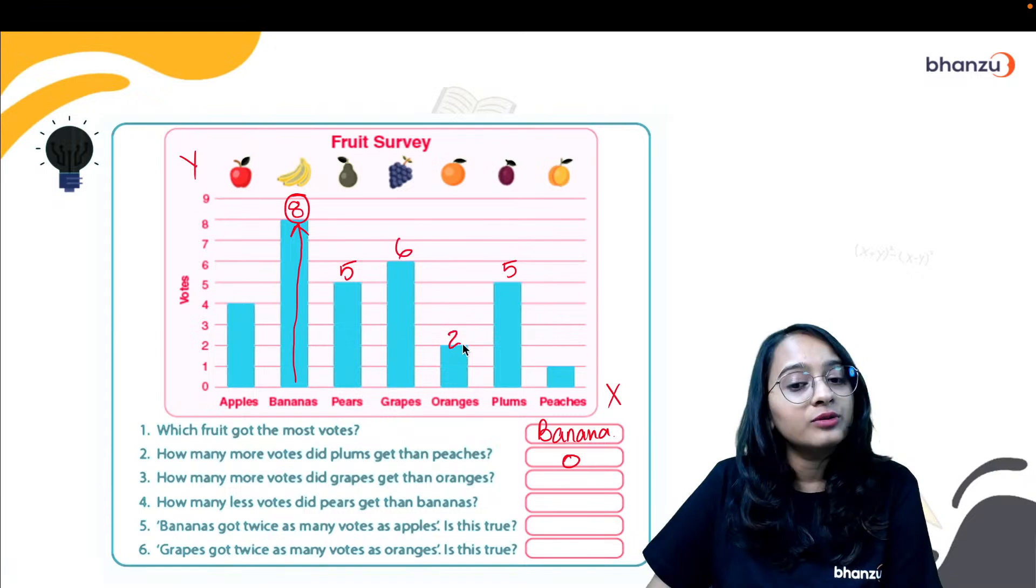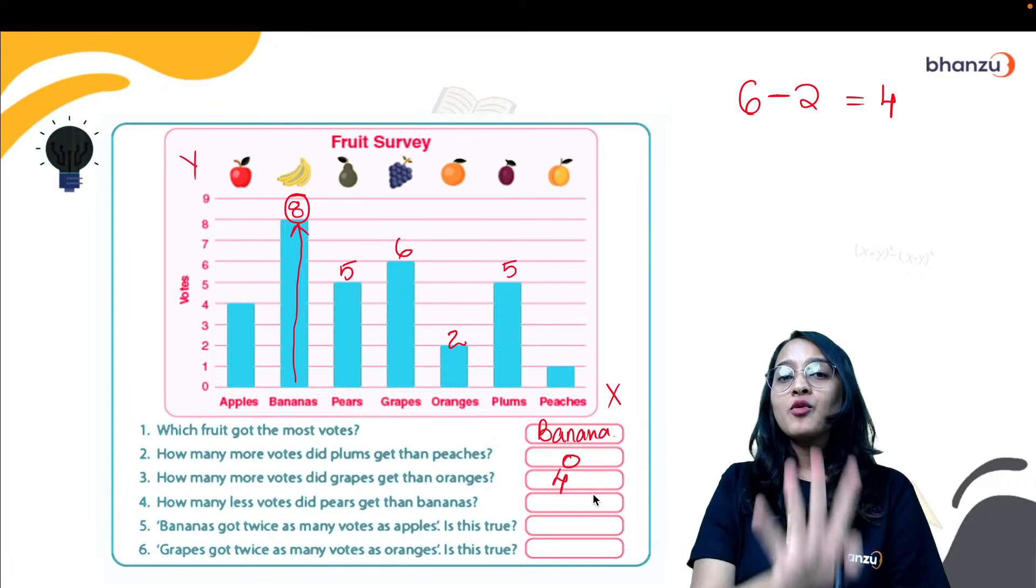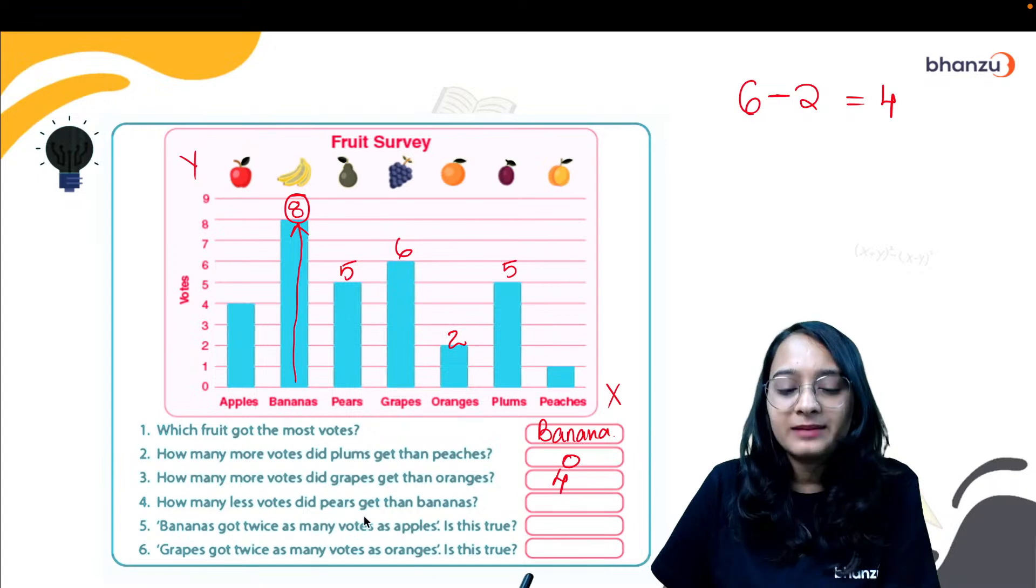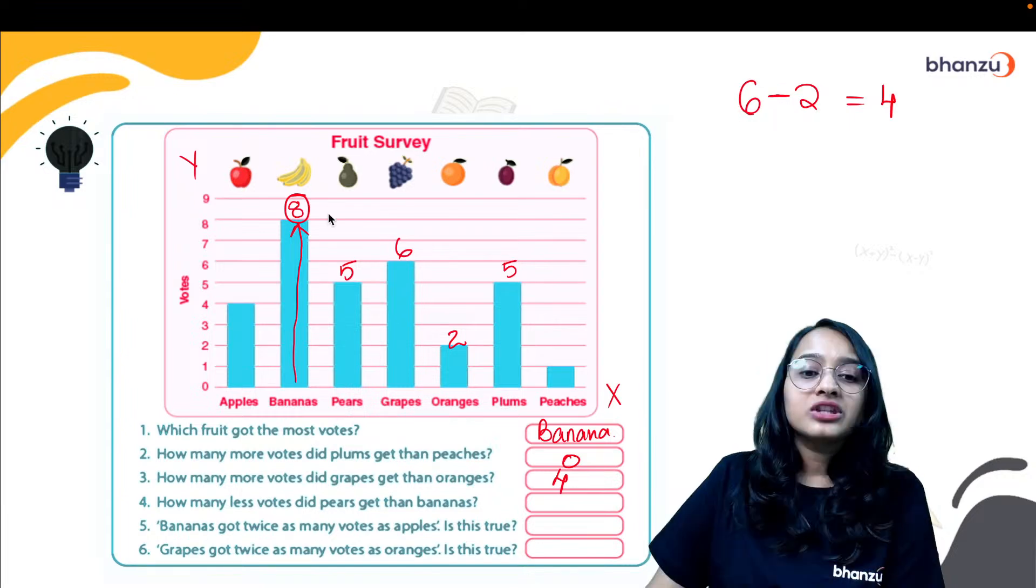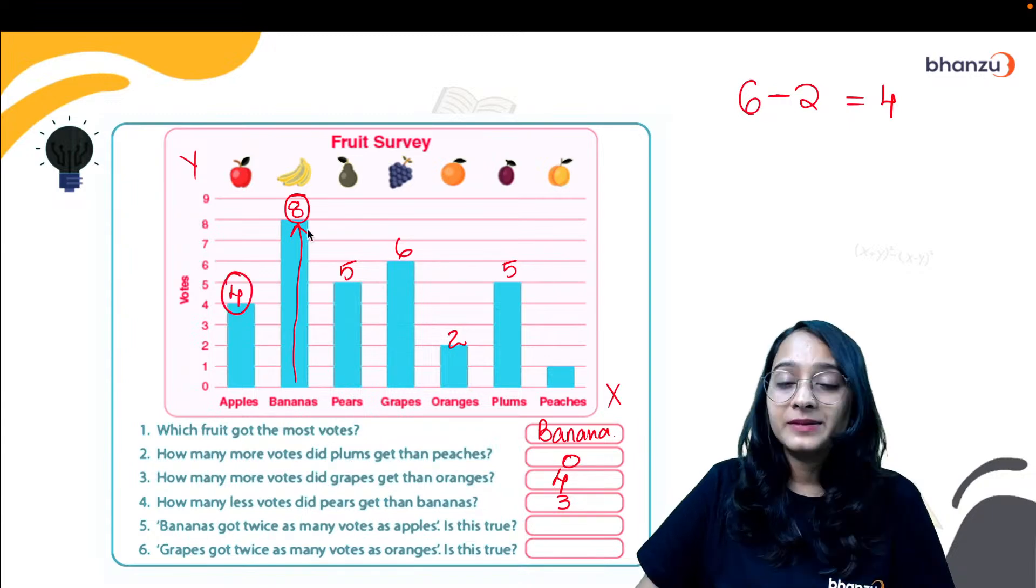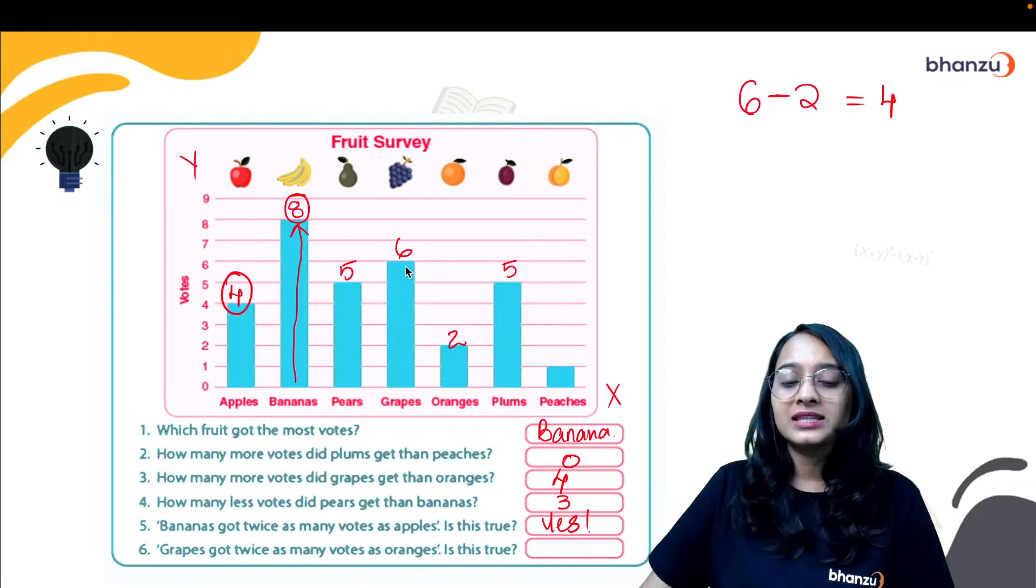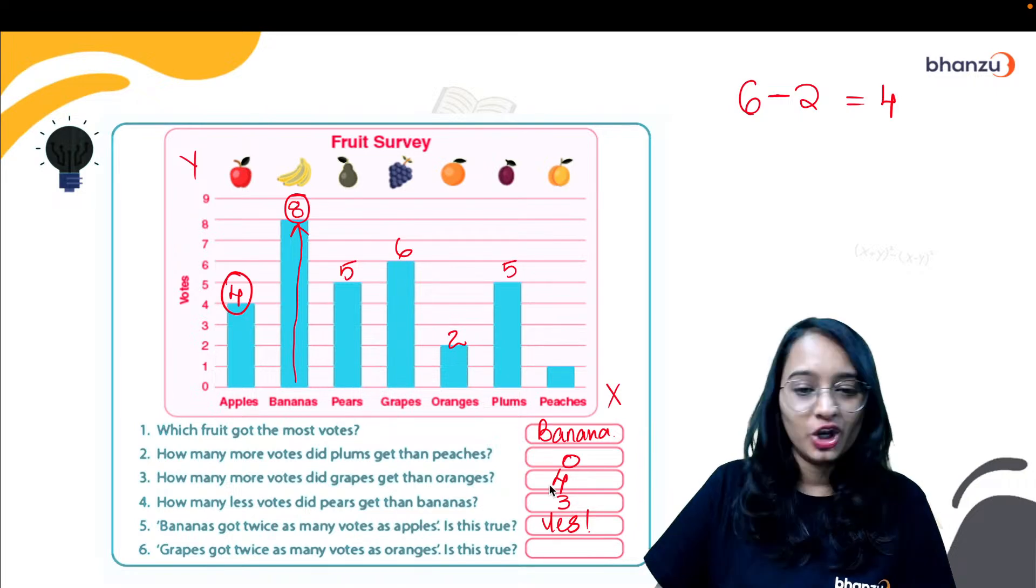How many more votes did grapes get than oranges? Grapes has 6 votes, oranges has only 2 votes. So how many more votes did the grapes get? You're going to subtract them. So grapes has got 4 more votes than the oranges. How many less votes did pear get than bananas? Pear is 5, bananas is 8. So how many less? 3 less. Bananas got twice as many votes as apples. Is that true? Apples got 4 whereas bananas got 8. So the answer is yes, yes that's true. Grapes got twice as many votes as oranges. Grapes got 6, oranges got 2. Is it twice? No, it is thrice, because 2 multiplied with 3 is giving you 6.